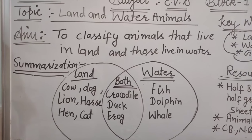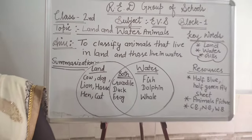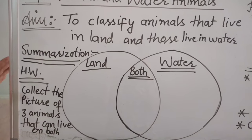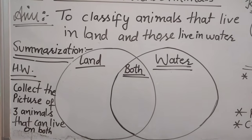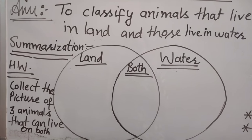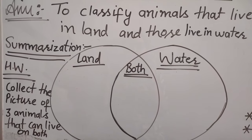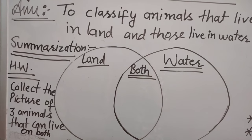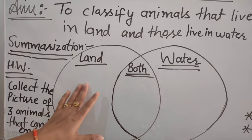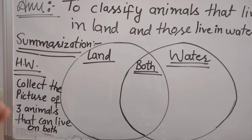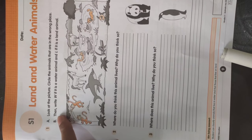Now we are going to complete our S1 worksheet — open your S1, page number 9. Our homework is to collect pictures of three animals that can live on both land and water. You can stick those pictures, or if you cannot collect pictures, you can make a Venn diagram and write the names of animals that live on both water and land. You can also draw pictures of those animals. Open your S1, Chapter 1, page number 9. First question: look at the picture and circle the animals that are in the wrong place.